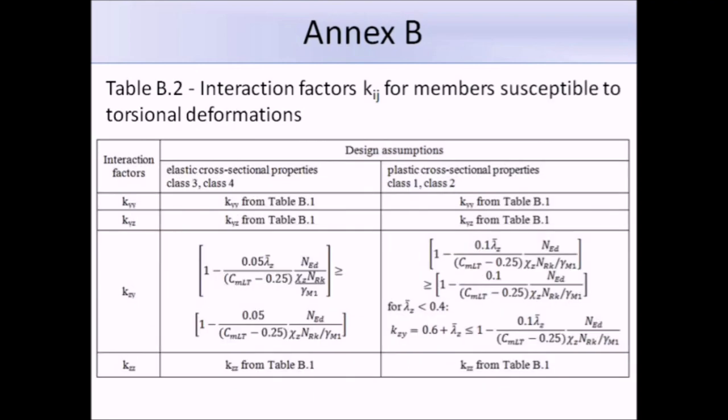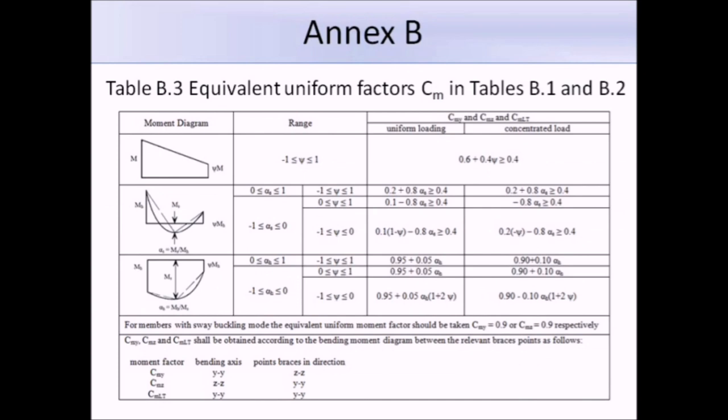This is table B.2, interaction factors KIJ for members susceptible to torsional deformations. It's very similar to table B.1. In some cases, we are told to refer back to table B.1, so you just use this the same as table B.1. This is table B.3, and this is where we get the equivalent uniform factors that we need to use in tables B.1 and B.2. I'm not going to go through every single equation. Instead, I'm going to go through an example.